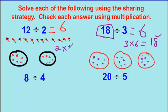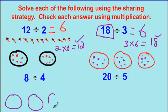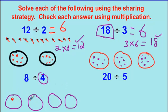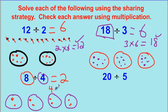For 8 divided by 4, draw four groups and distribute all eight items — one here, two, three, four, five, six, seven, eight. The answer is two. Check it: four times two equals eight. They match.